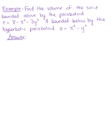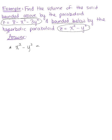Since we know it's bounded above by the paraboloid and bounded below by the hyperbolic paraboloid, we immediately know the Z bounds. Z is greater than or equal to x² - y², but less than or equal to 8 - x² - 3y².